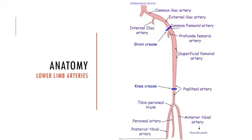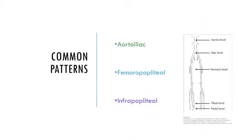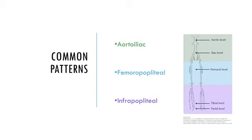The posterior tibial can be palpated behind the medial malleolus. Common patterns of PAD in the lower limb are categorized as aortoiliac, femoropopliteal, and infrapopliteal, but multilevel disease is common. Diabetic patients often develop infrapopliteal disease.